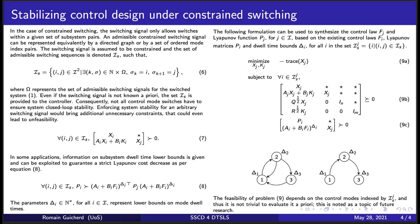This inequality can be linearized based on a change of variable, yielding problem 4. We revisit this problem by introducing one Lyapunov function per subsystem, which allows us to increase the overall performance of the switching system in closed-loop. In the case of constrained switching, the switching signal only allows switches within a given set of subsystem pairs, denoted IS in equation 6. Information about a lower dwell-time bound can be exploited as per equation 8. Our novel approach proposes a formulation encoding dwell-time bounds directly in the control synthesis formulation in a sequential way, as presented in problem 9.